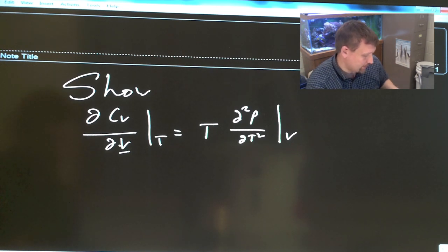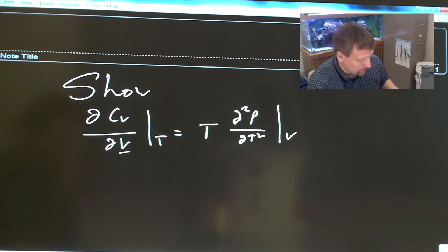Show partial CV with respect to V at constant temperature equals T times partial squared P with respect to T squared at constant volume, underbar.